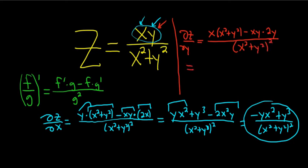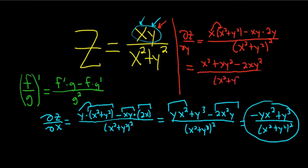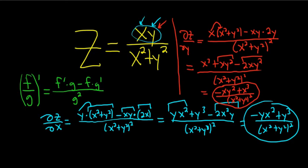Let's clean this up. This gives x cubed — x times x squared is x cubed — plus xy squared, minus 2xy squared, all over x squared plus y squared squared. You can combine like terms: xy squared minus 2xy squared gives negative xy squared plus x cubed. The bottom is still x squared plus y squared squared. That's the partial derivative with respect to y.